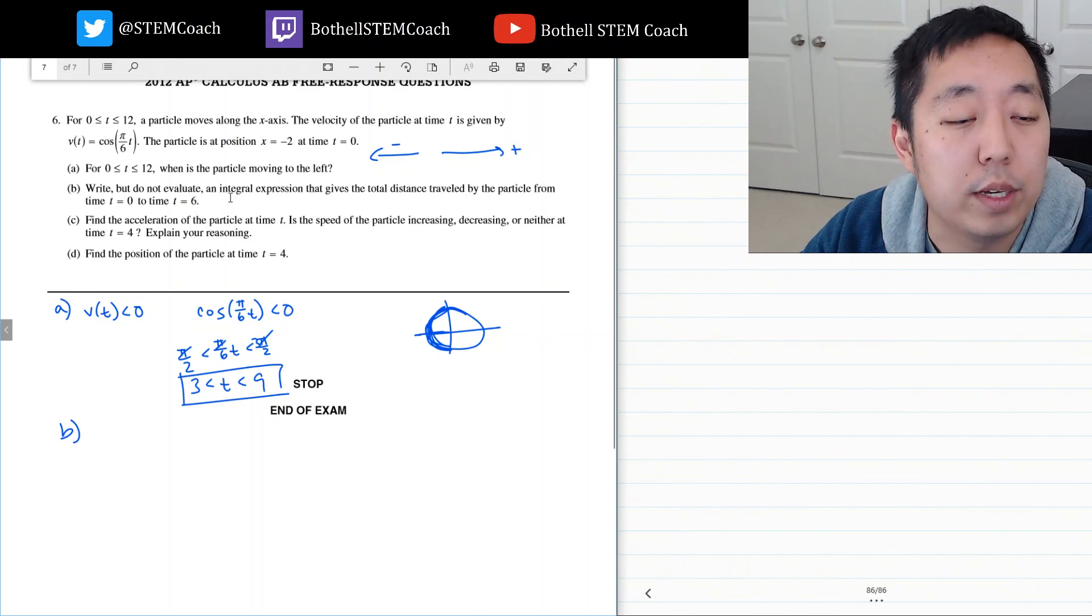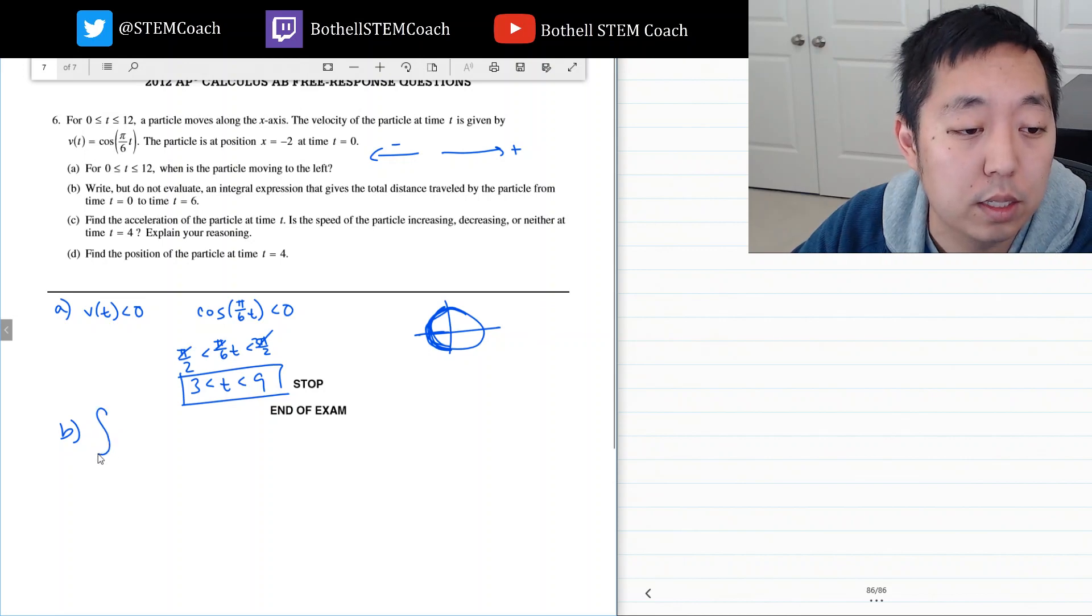Write but do not evaluate an integral expression that gives the total distance traveled by the particle from time 0 to 6. Total distance traveled is always the integral of speed. The integral of speed is the absolute value of v of t from 0 to 6.